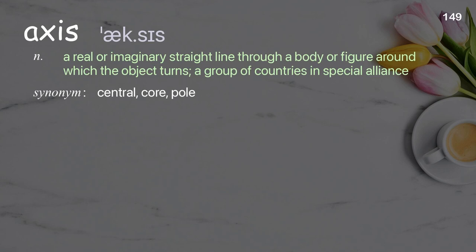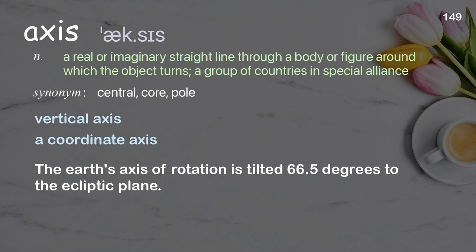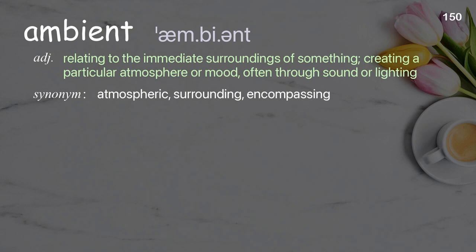Axis: a real or imaginary straight line through a body or figure around which the object turns; a group of countries in special alliance. Examples: vertical axis; a coordinate axis; the Earth's axis of rotation is tilted 66.5 degrees to the ecliptic plane.